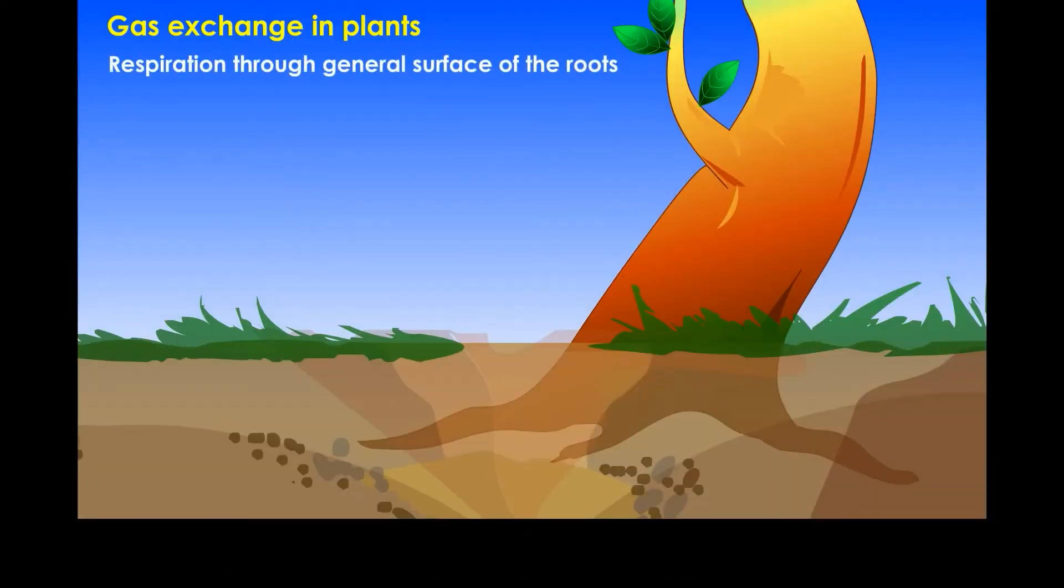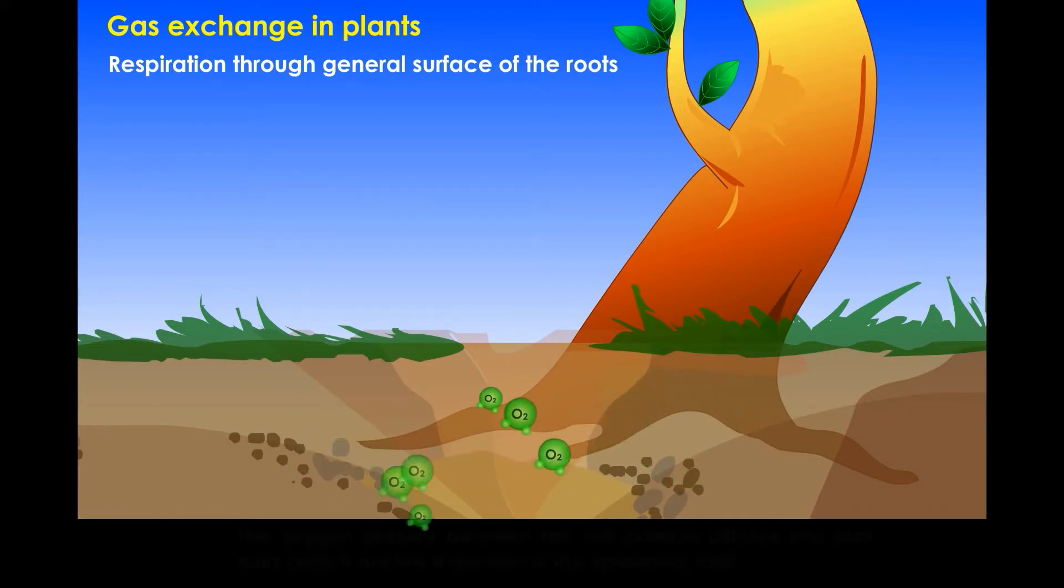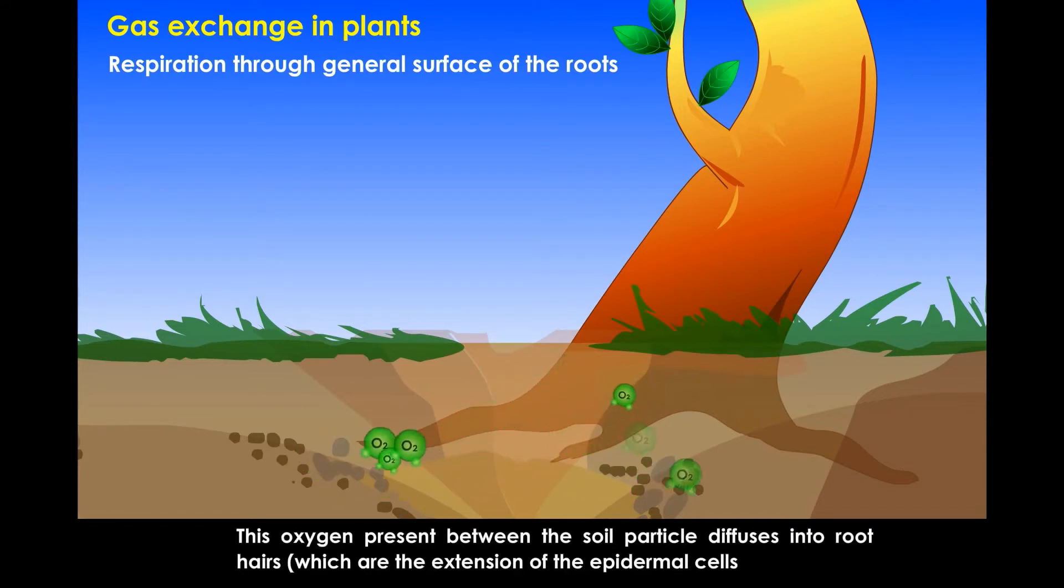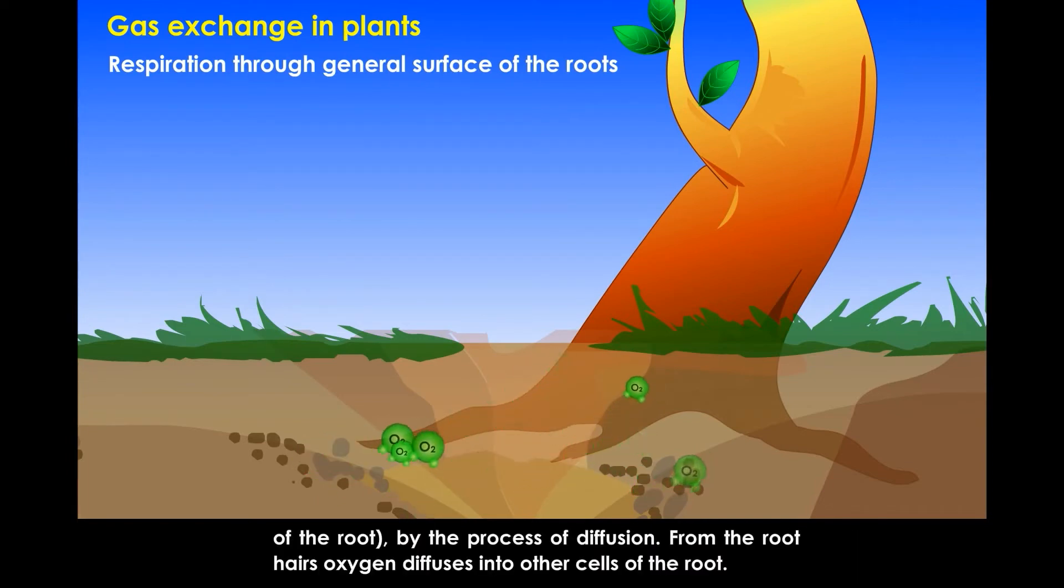Respiration through general surface of the roots. Plowing or tilling of the soil creates small air spaces around soil particles, which provide the sources of oxygen for the roots. This oxygen, present between the soil particles, diffuses into root hairs, which are the extension of the epidermal cells of the root, by the process of diffusion.